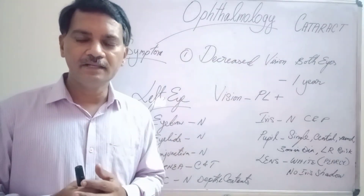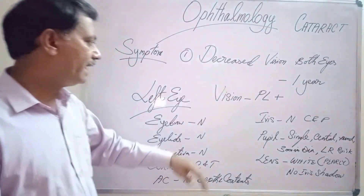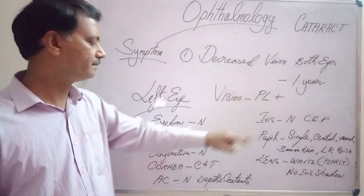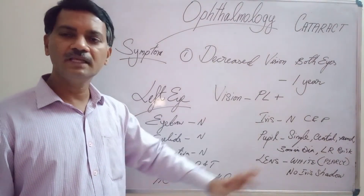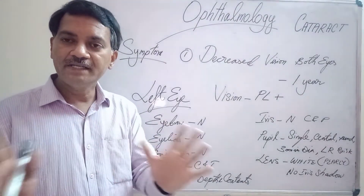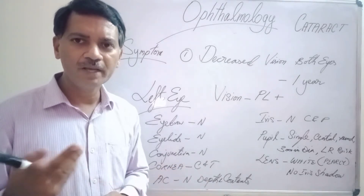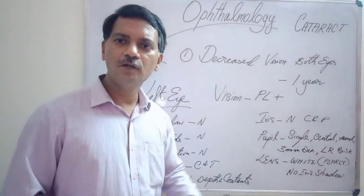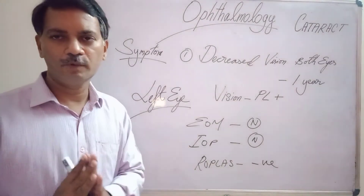After completing the right eye examination, as per protocol I moved to the left eye. Vision was only perception of light. Eyebrows, eyelids, conjunctiva, cornea, anterior chamber, iris, and pupil were all normal. The lens was white in colour — not pearly white, but completely white. There was no iris shadow. Extraocular movements, intraocular pressure, and the regurgitation test were all normal.